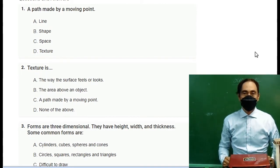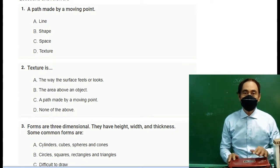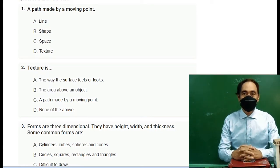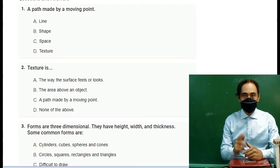Let's go. Number two: Texture is A. the way the surface feels or looks, B. the area about the object, C. a path made by a moving point, D. none of the above.